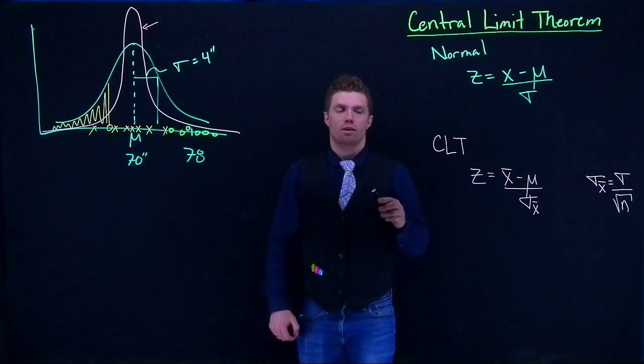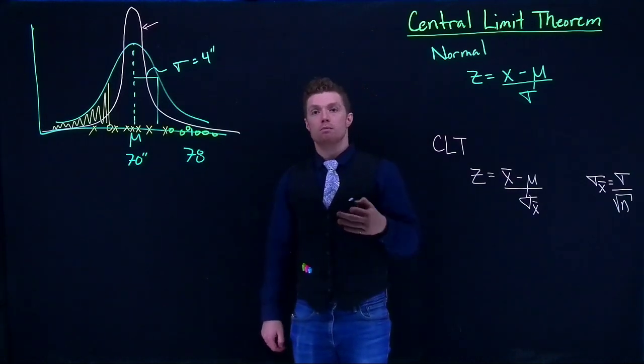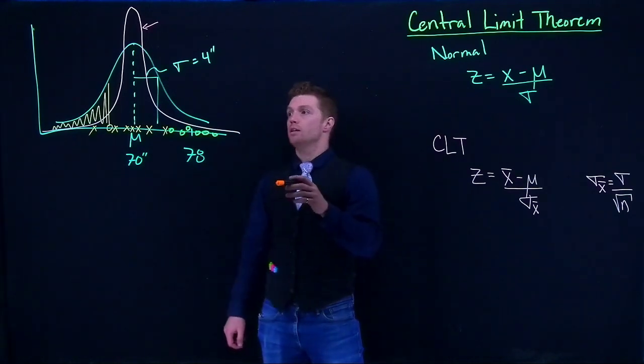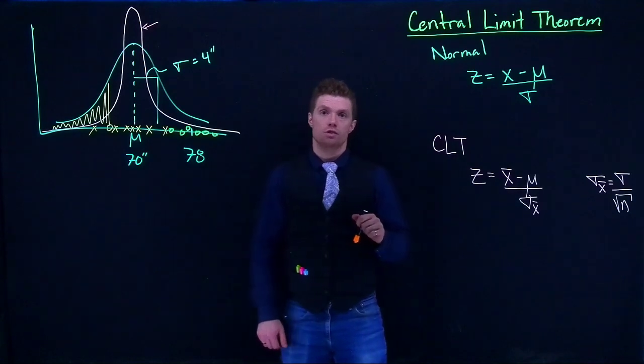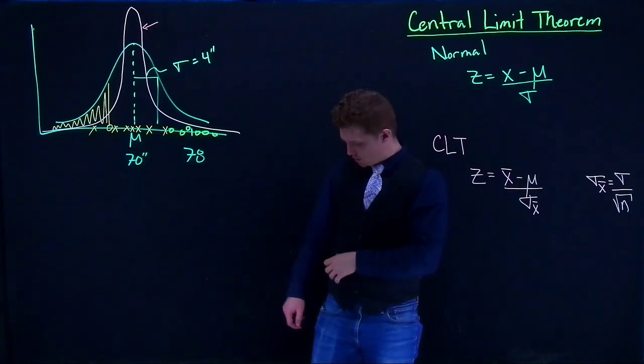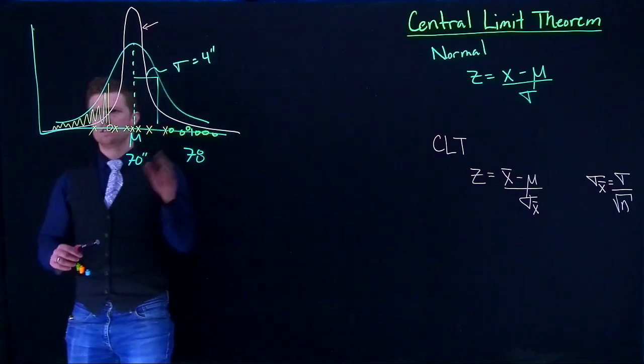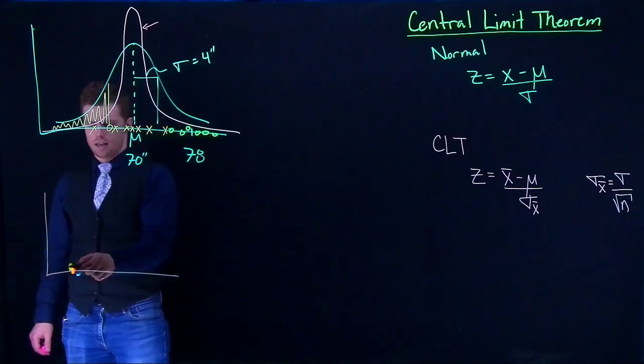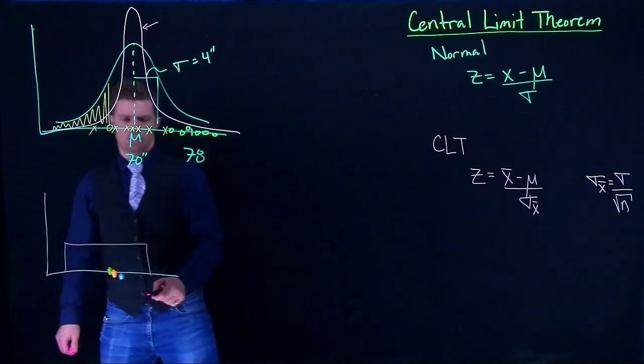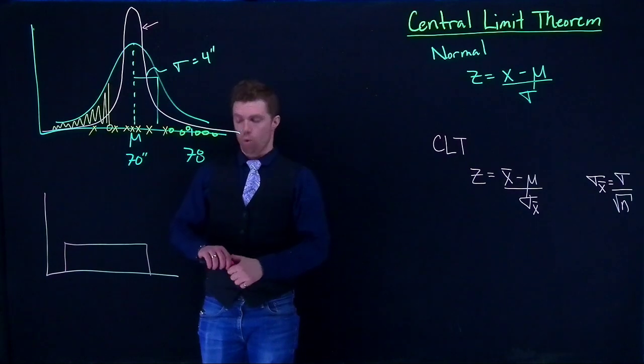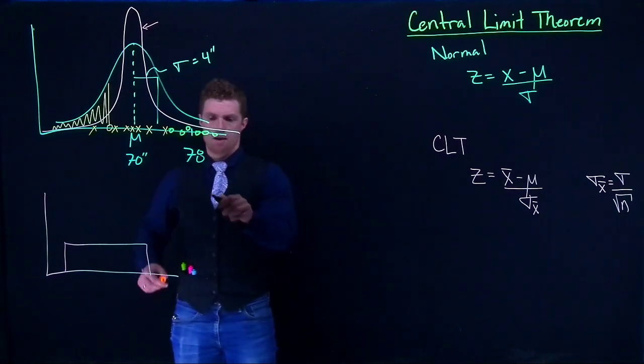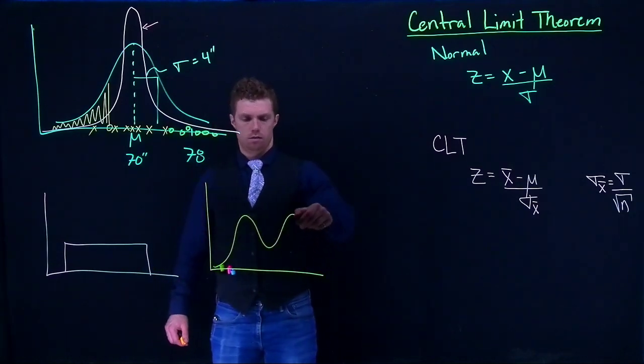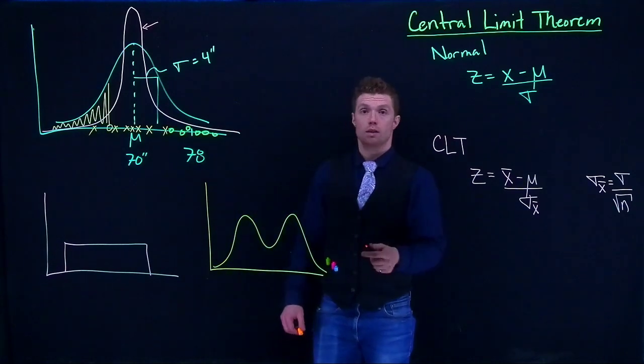But the next part that we're going to learn about the central limit theorem is probably the most important. So the central limit theorem does not just have to be applied to original distributions that were normal. What this means is that instead of our original distribution looking normal, we could have a distribution that was uniform, or we could have something that was maybe bimodal. Now those aren't normally distributed.